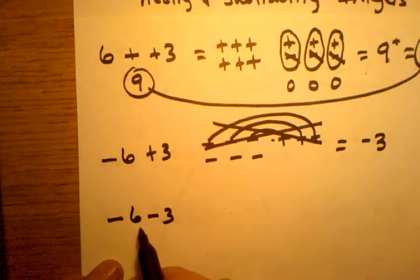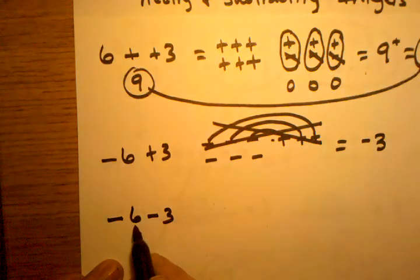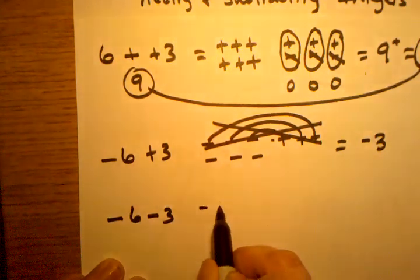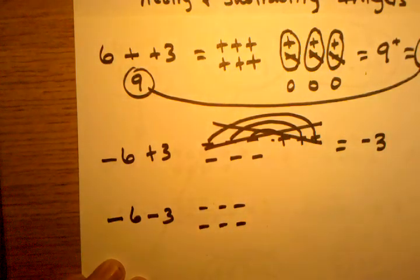So I'm going to do the same thing. Now I'm going to do it with negative six, subtracting a positive three. So let's start off with our negative six. One, two, three, four, five, six. There's my six negative signs.